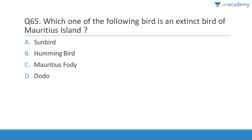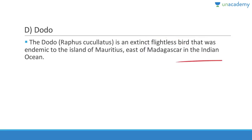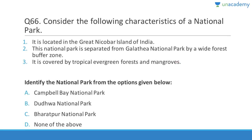Question 65: Which bird is an extinct bird of Mauritius Island? Answer is dodo. Before humans arrived in the 15th century everything was fine, but once humans landed there they completely destroyed it. Dodo, Raphus cucullatus, is an extinct flightless bird that was endemic to the island of Mauritius east of Madagascar in the Indian Ocean.